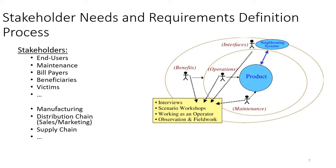Stakeholders are anybody who will touch the system at one point or another. In terms of operations, those stakeholders are generally end users, people supporting and maintaining the system, bill payers, beneficiaries, and victims. For example, in the purchase of military systems, the bill payers don't actually use the system, so they're not end users — and there can be challenges when bill payers don't fully understand the operational needs. There are also stakeholders associated with development, manufacturing, distribution, and supply chain, such as an integrated product team (IPT), though those are not technically operational stakeholders.